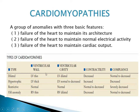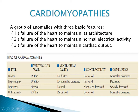In dilated cardiomyopathy, there is left ventricular wall thinning and the cavity dilates, resulting in decreased contractility. In hypertrophic cardiomyopathy, there is left ventricular thickening with a normal or decreased cavity, so contractility is increased but diastolic filling compliance is decreased. In restrictive cardiomyopathy, ventricular wall and cavity are normal but compliance and diastolic filling are severely decreased. UHL anomaly involves the right ventricle, which becomes thin and dilated, similar to the dilated type but confined to the right ventricle.